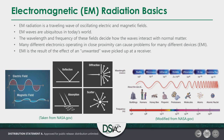EM radiation is composed of a traveling wave of oscillating electric and magnetic fields. They are ubiquitous throughout today's world, governed by wavelength and frequency, which decides how they interact with normal matter. Problems arise when you have many different types of electronics operating within close proximity to each other — you start to see electromagnetic interference, which is the result of an unwanted wave being picked up at a receiver. There are four things going on: reflection, absorption, diffraction, and scattering. Reflection is simply reflecting a wave off of a surface.